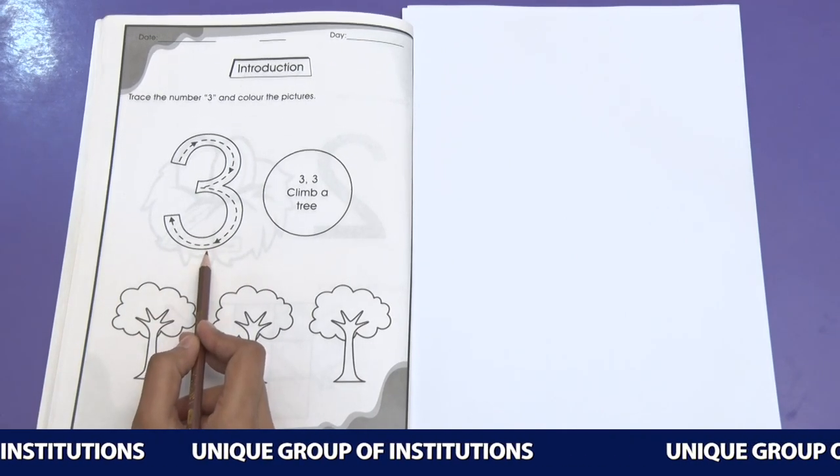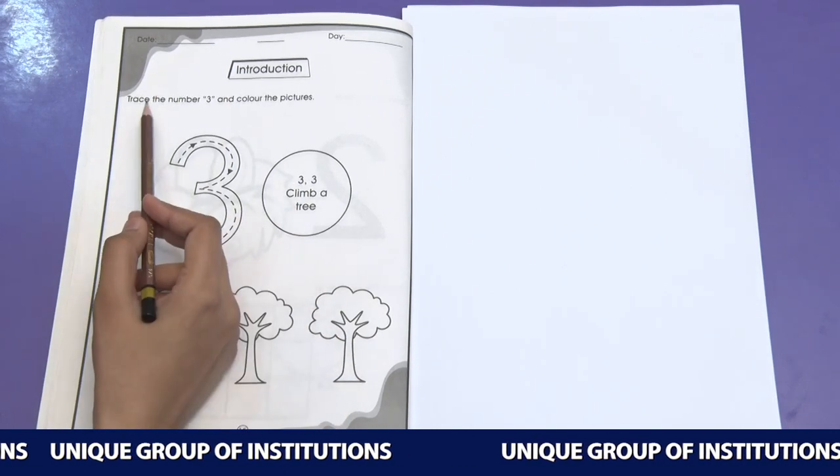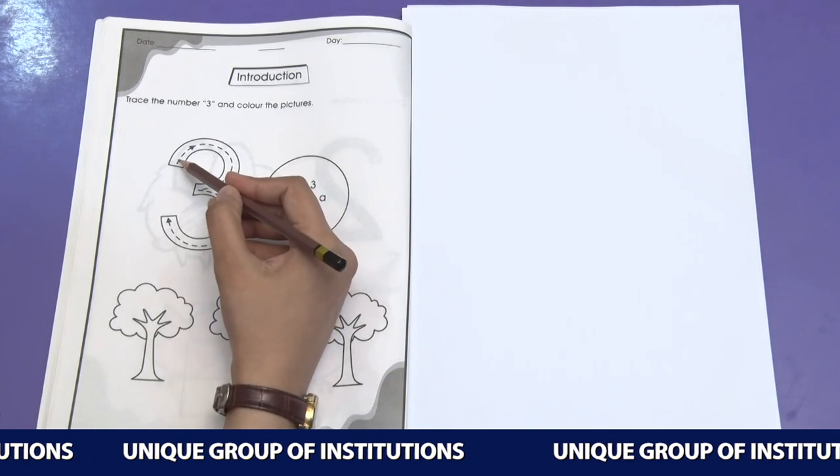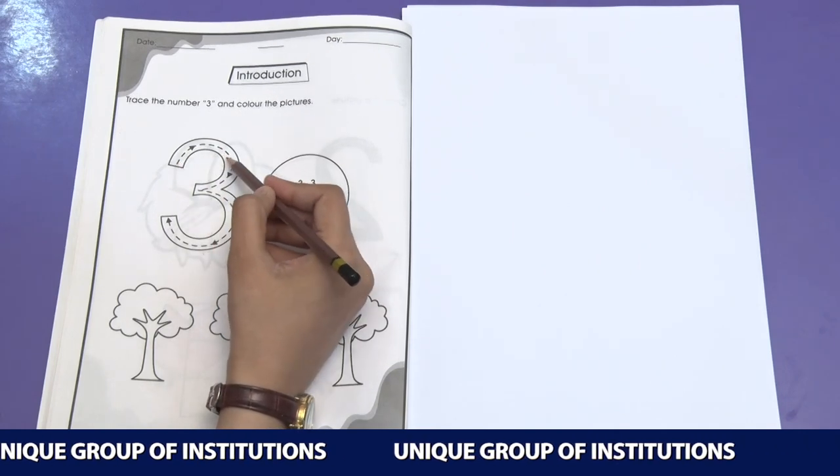We are going to learn how to trace the number 3 and color the pictures. Let's start tracing. First of all, we are going to form a curve.